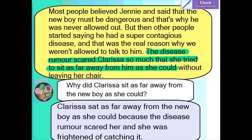Okay year four, how did you get on? The question was: why did Clarissa sit as far away from the new boy as she could? We've got keywords to scan — Clarissa, and why she sat far away from the new boy. Reading the text, it says: 'the disease rumour scared Clarissa so much that she tried to sit as far away from him as she could.' In your answer you may have written: Clarissa sat as far away from the new boy as she could because the disease rumour scared her and she was frightened of catching it.